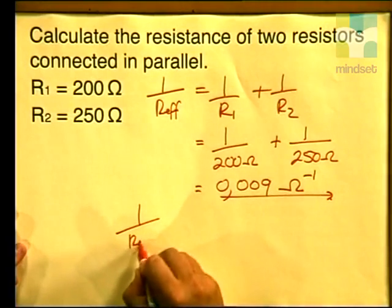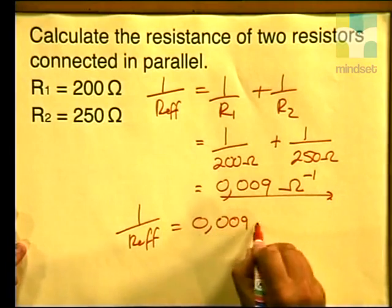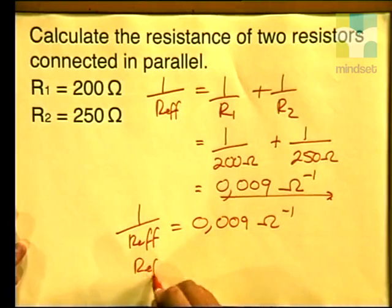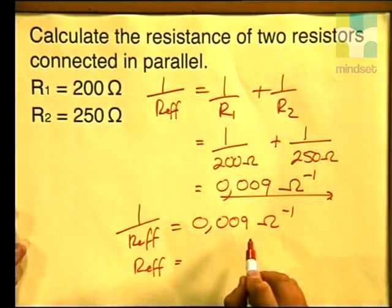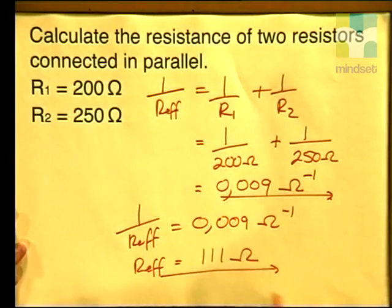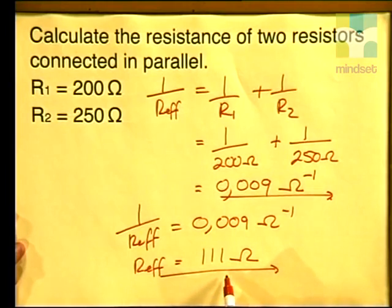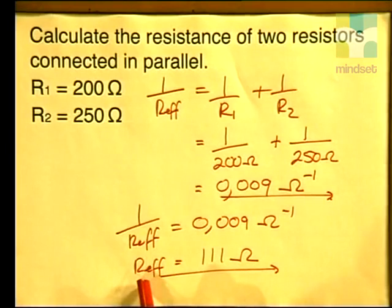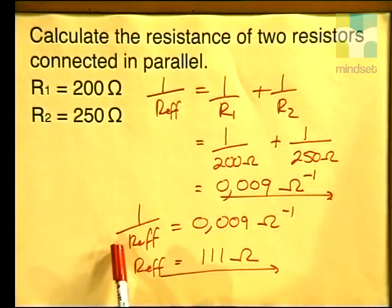Now here is an important part of the problem. What we have just calculated is 1 over R effective — we need to now calculate the value of R effective itself. If 1 over R effective equals 0.009 ohms to the minus 1, then we must find the inverse of 0.009. Using your calculators, the inverse of this value is 111 ohms. So the effective resistance of these two resistors connected in parallel is 111 ohms. Remember to invert the expression to determine the value of the effective resistance and not just its reciprocal value.